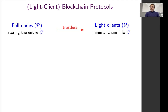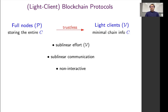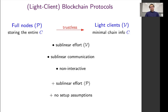In LightClient blockchain protocols, you have a full node prover and a LightClient verifier. The prover stores the entirety of the blockchain; the LightClient has minimal information about the chain, say its genesis block. The protocol must satisfy a few properties: the verifier's effort is sublinear, the communication is sublinear, and the protocol is non-interactive. If additionally the prover's effort is sublinear and there are no setup assumptions, that's even better. Our protocol achieves all of these properties.